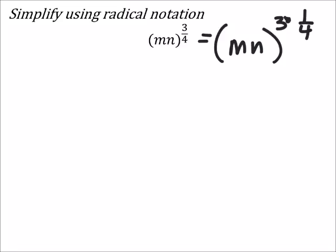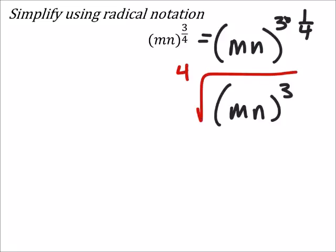Which means that I would have this MN. It's going to be cubed, and then I'm going to fourth root that stuff.